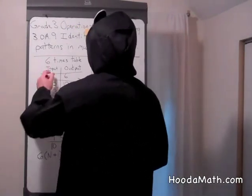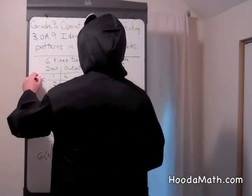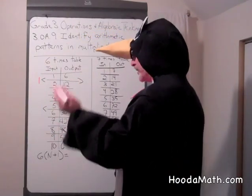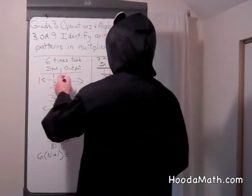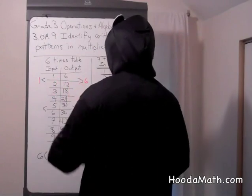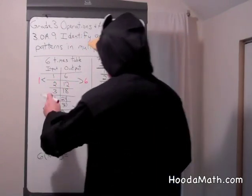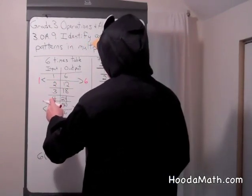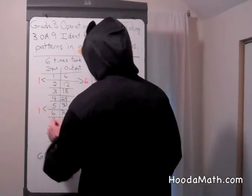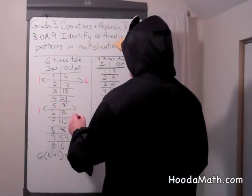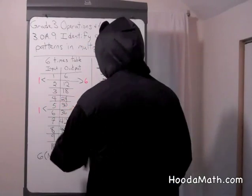Well, first, when we go from one to two, the input increases by one. The output increases by six. If we look down further, going from five to six, the input increases by one. Going from 30 to 36, increases by six.